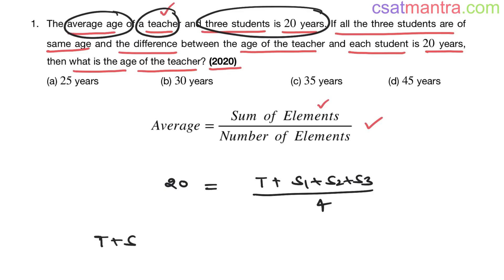In the second sentence it is given that all the three students are of same age. That means S1 is equal to S2 is equal to S3. Let's assume it as x.